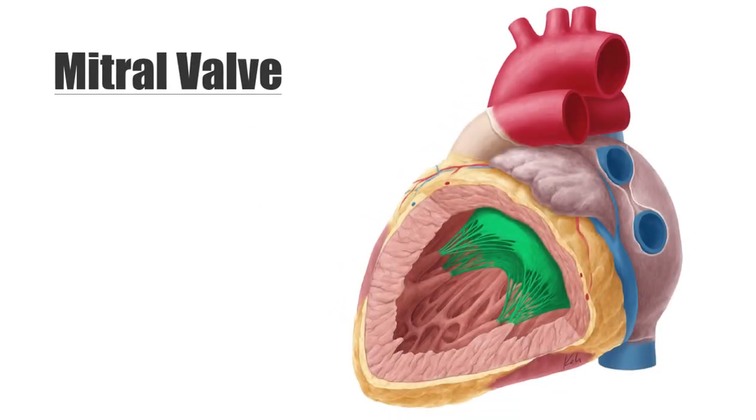Hey everyone, this is Matt from KenHub. The valves of the heart serve the cardiovascular system by controlling the direction of blood flow during circulation and determining the exact moment in which the blood passes between the chambers of the heart as well as in and out of it entirely. In this tutorial, we will specifically explore the anatomy, function, and area of the mitral valve or bicuspid valve.